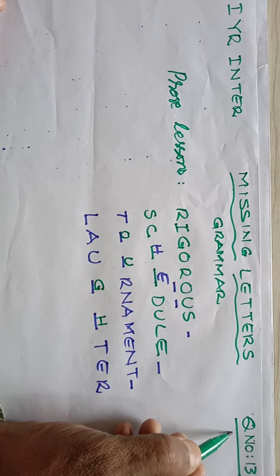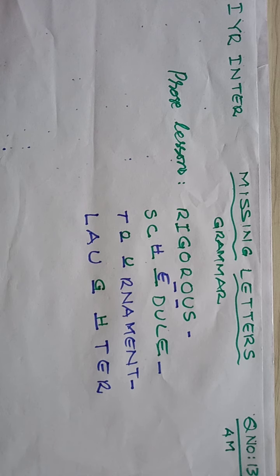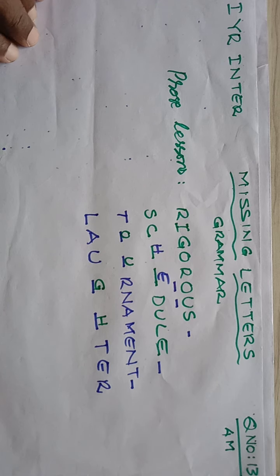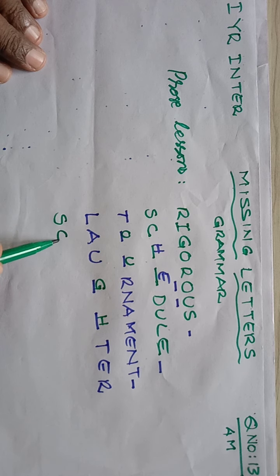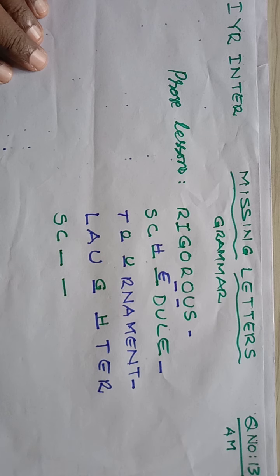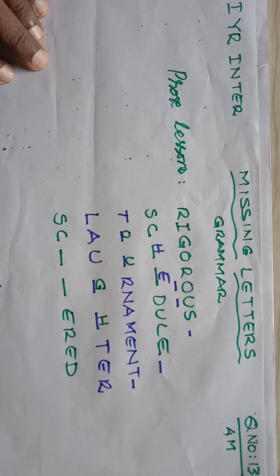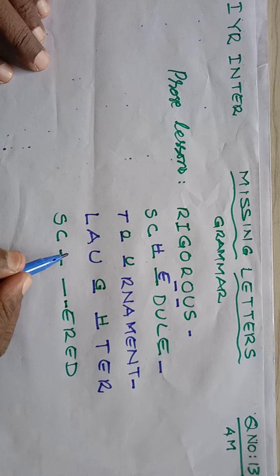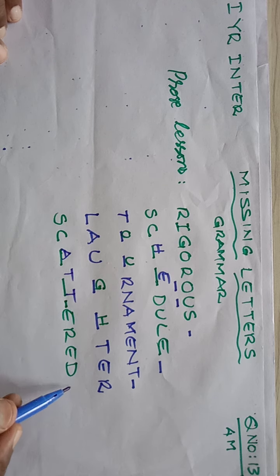They will give you eight items and we have to gain four marks from this. Almost all words are from the textbook itself. For example: S-C-dash-dash-dash-E-R-E-D — the missing letters are A-T-T, making the word 'scattered'. This is how we have to write the missing letters.